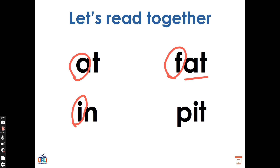And last one. What does this word say? Well done, this is the word pit. P, I, T, pit. What vowel sound do we hear in the word pit? Good, we hear I, I, I, made by the letter I.